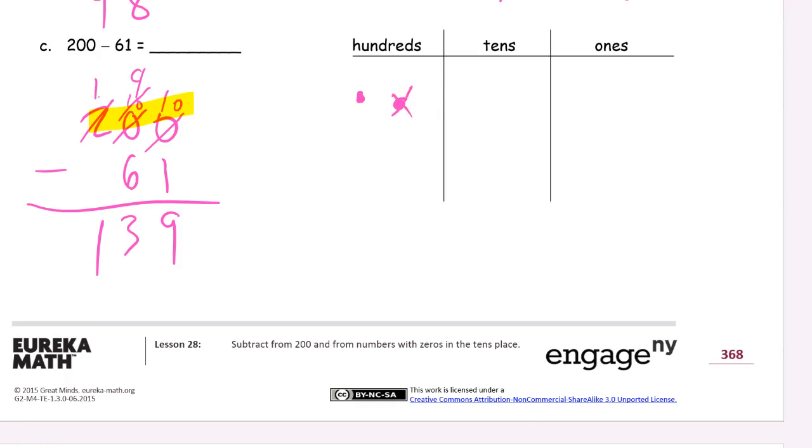So we start off with just 200s. Got to unbundle this for 10 tens. Counting 1 through 10. And then unbundle that 10 and we get 1 through 10 ones. Subtract 1. Subtract 6 tens. That's all those 5 and that one there. 3 tens left. 9 ones. And don't forget that 100. 139.